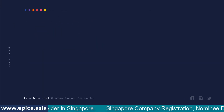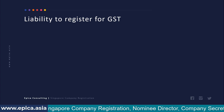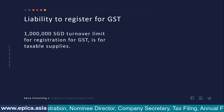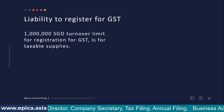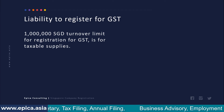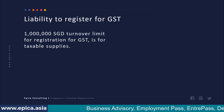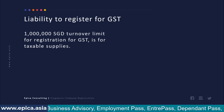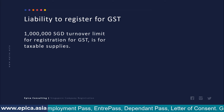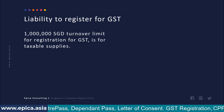First, let's understand that liability to register for GST arises when your turnover in a year either exceeds or is likely to exceed one million Singapore dollars for taxable supply. So if you are supplying goods which are taxable either at seven percent or zero percent, and if your turnover in one accounting year is likely to cross one million dollars, then you have to compulsorily register for GST.